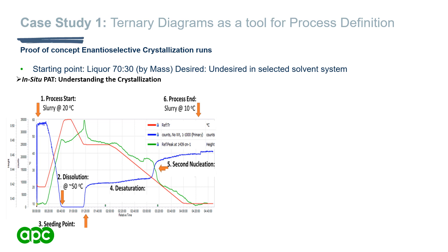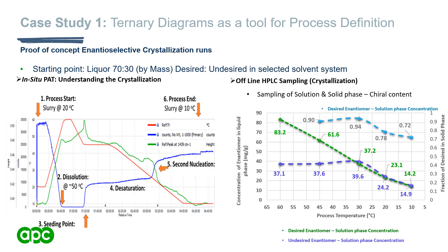Using our ternary phase diagrams, a potential process roadmap was constructed. As a proof-of-concept crystallization, we started with 70:30 weight percent desired to undesired enantiomer in a 50:50 IPA/water mixture. At APC we utilize inline PAT with our data-rich experimentation approach; in this scenario we used FTIR and FBRM to track our seeded crystallization. After effective seeding and dissolution, we observed desaturation, and during cooling to isolation temperature we observed a secondary nucleation event by FBRM and FTIR.